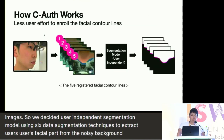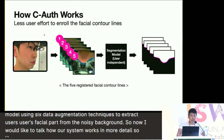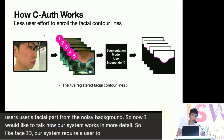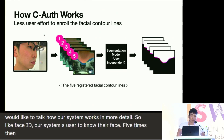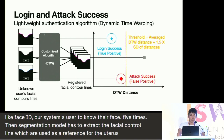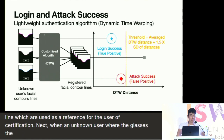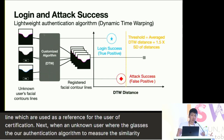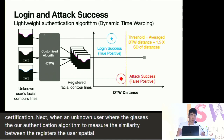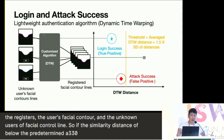Now let me talk about how our system works in more detail. Like Face ID, our system requires a user to enroll their face five times. The segmentation model then extracts the facial contour line, which is used as a reference for authentication. When an unknown user wears the glasses, our authentication algorithm measures the similarity between the registered user's facial contour and the unknown user's facial contour line. If the similarity distance falls below a predetermined threshold, the system grants access; otherwise, it rejects the user.